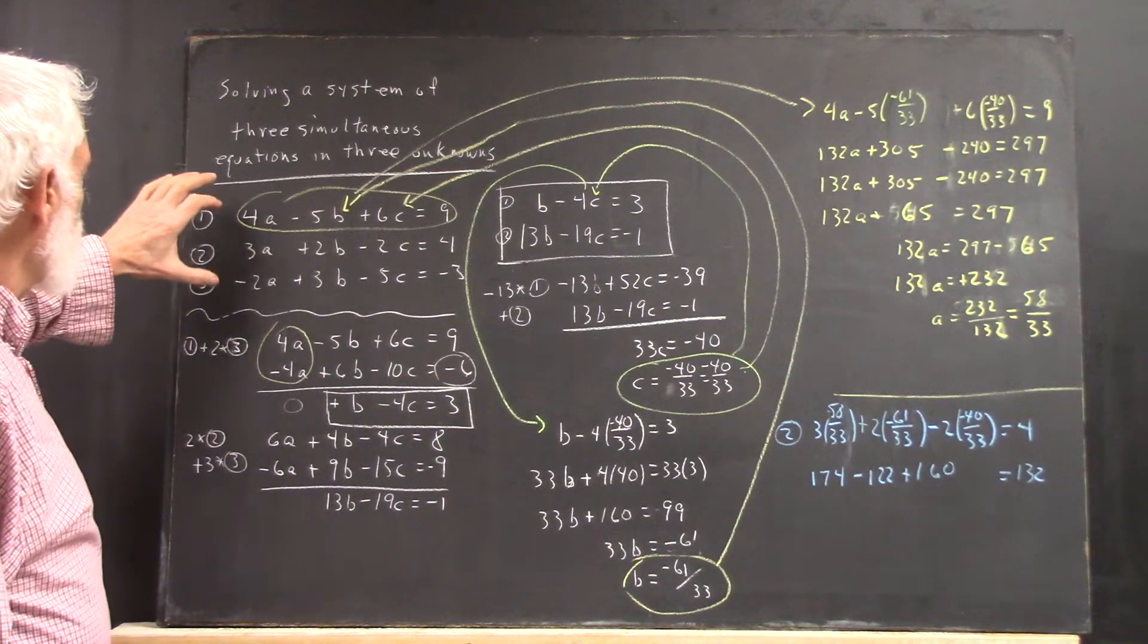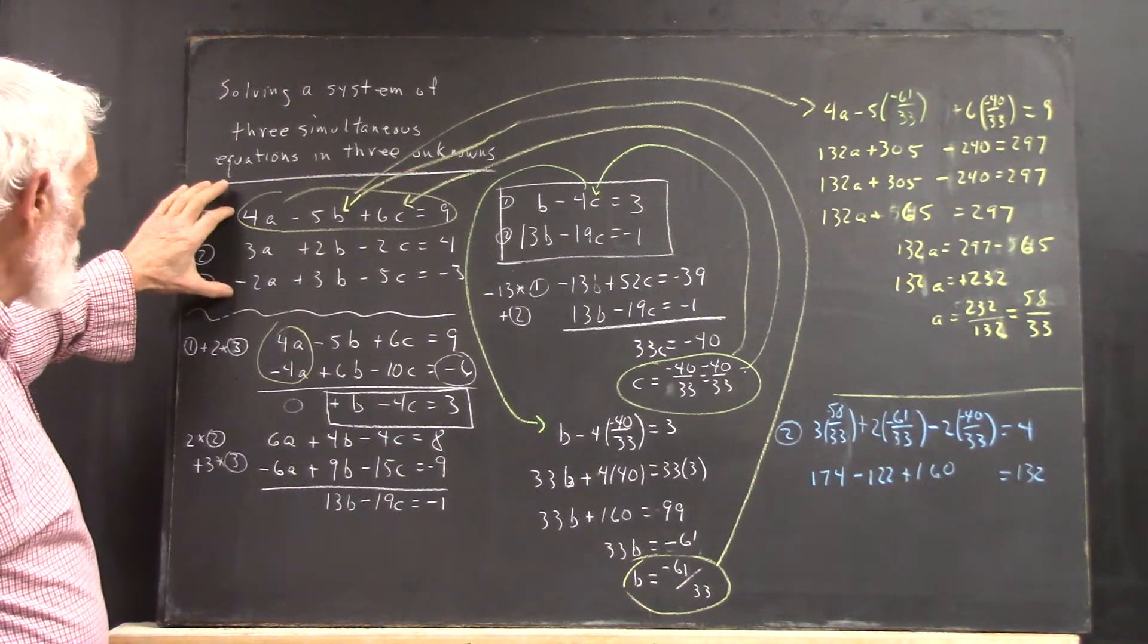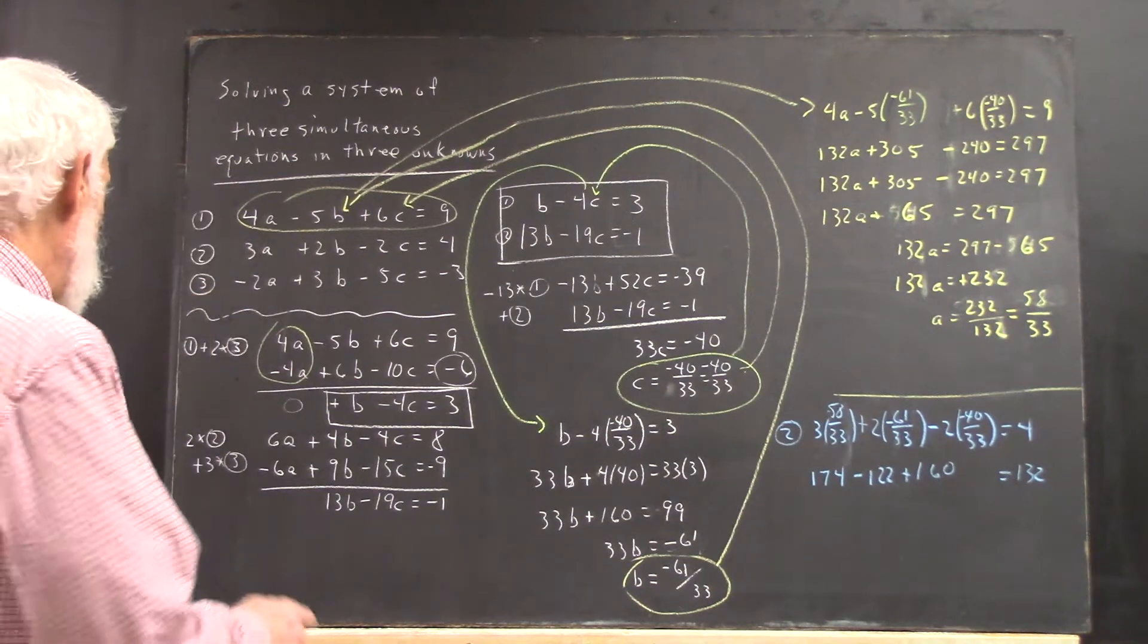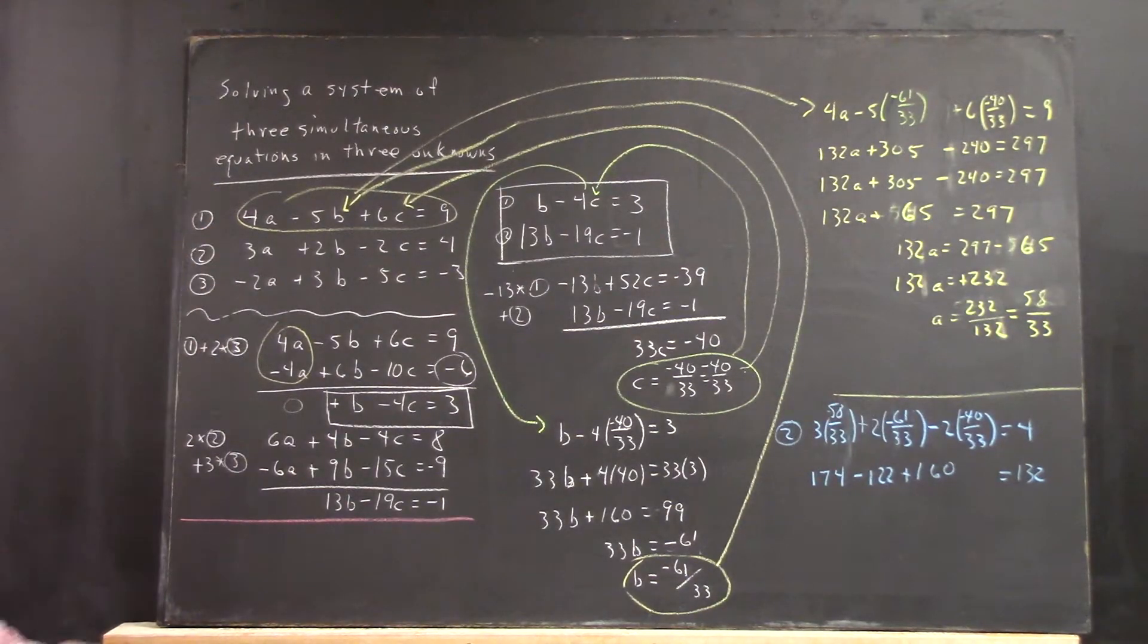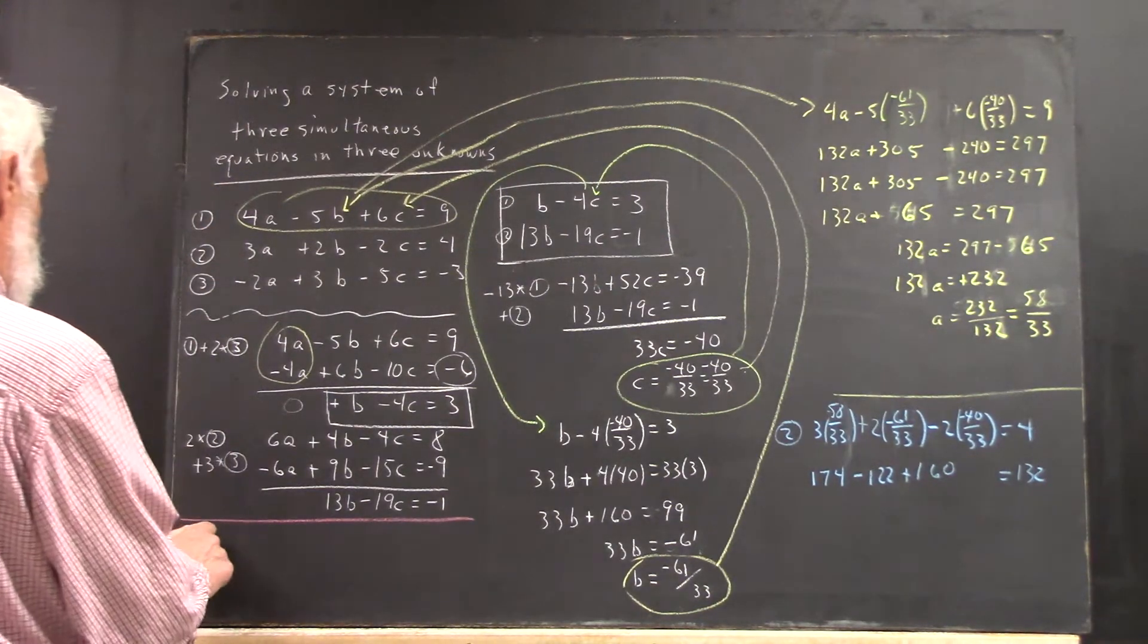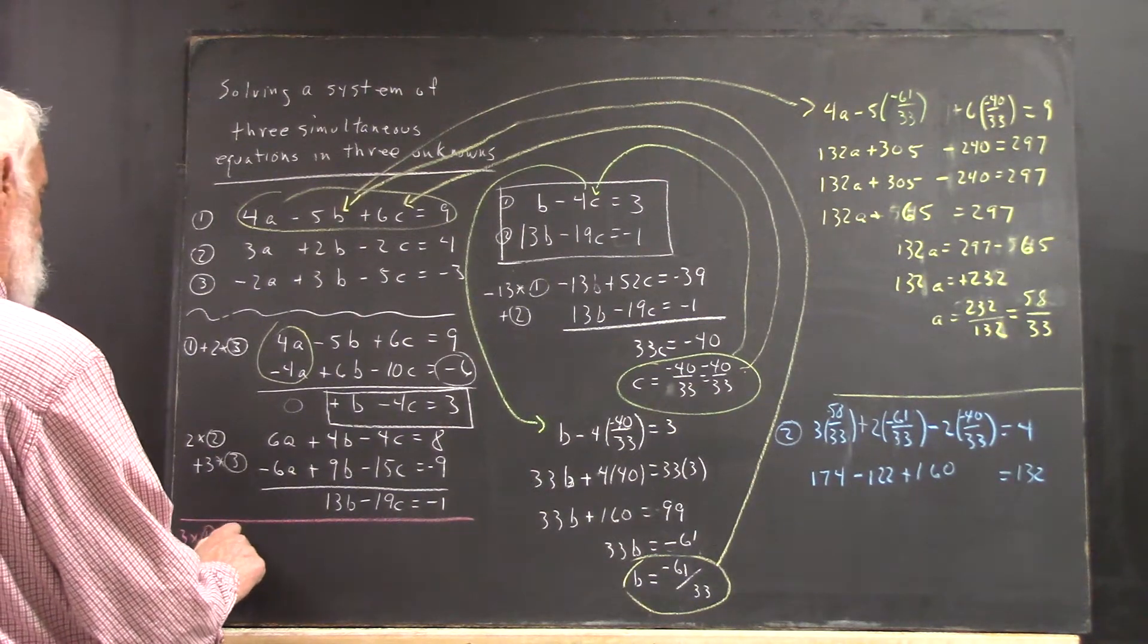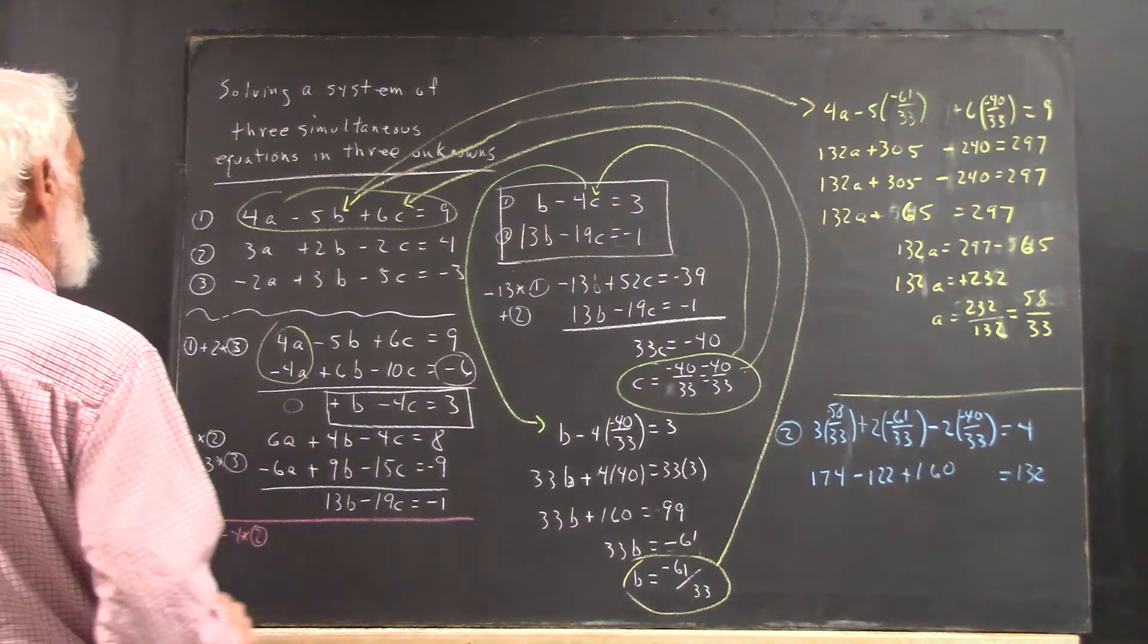I solved the first and third and the second and third. I eliminated A from the first and third and the second and third equations. Now, I could also have eliminated A from the first and second. So it would be 3 times the first minus 4 times the second would eliminate A.